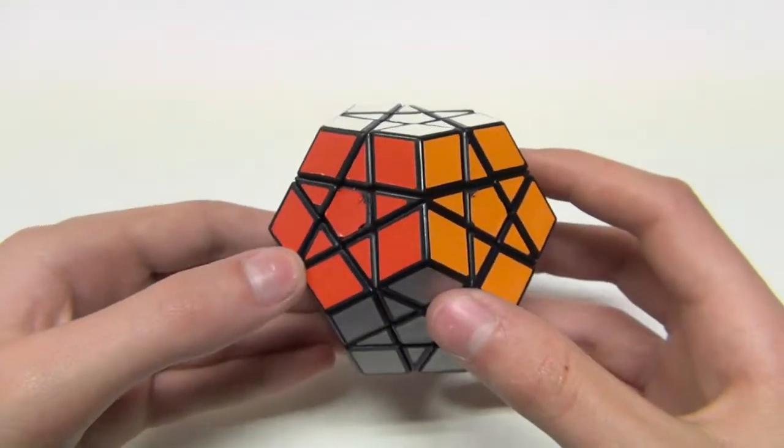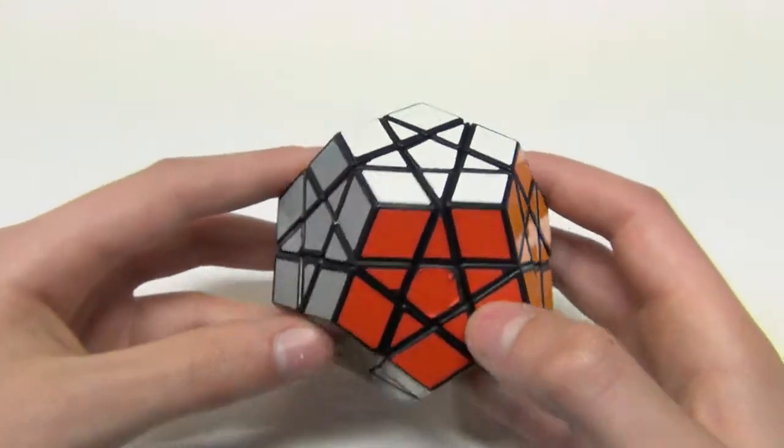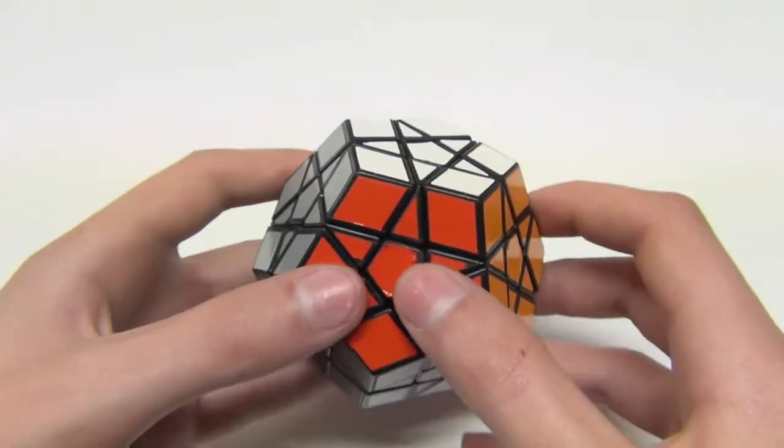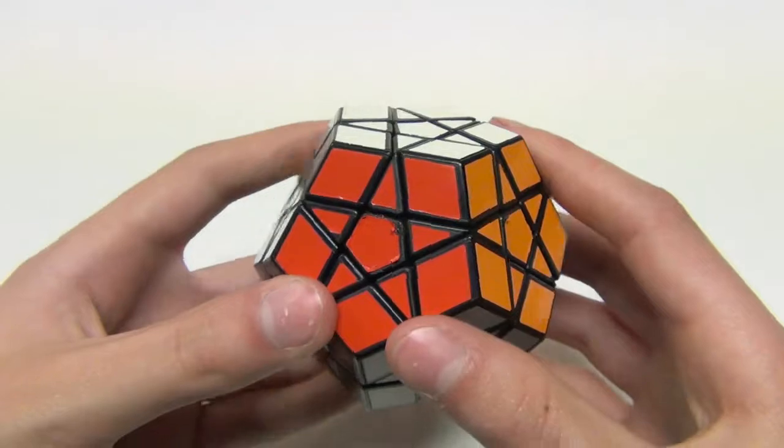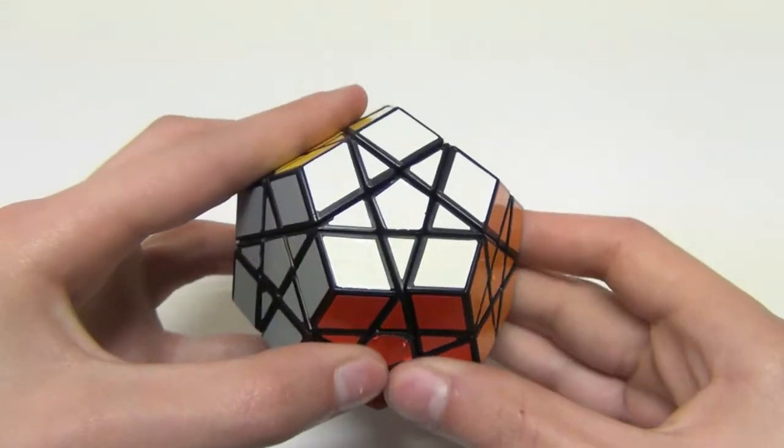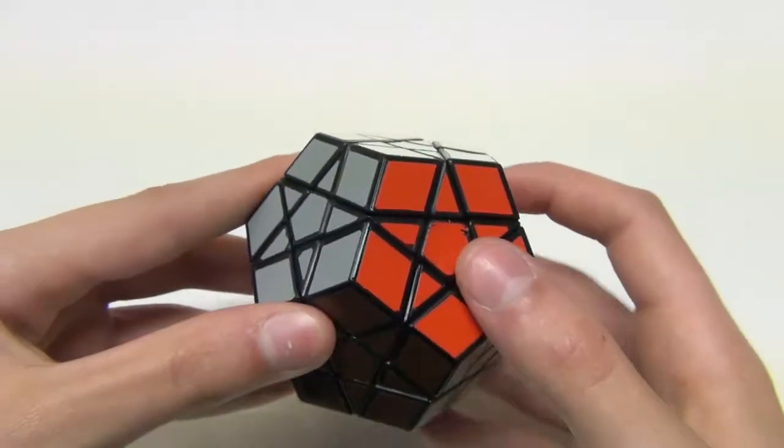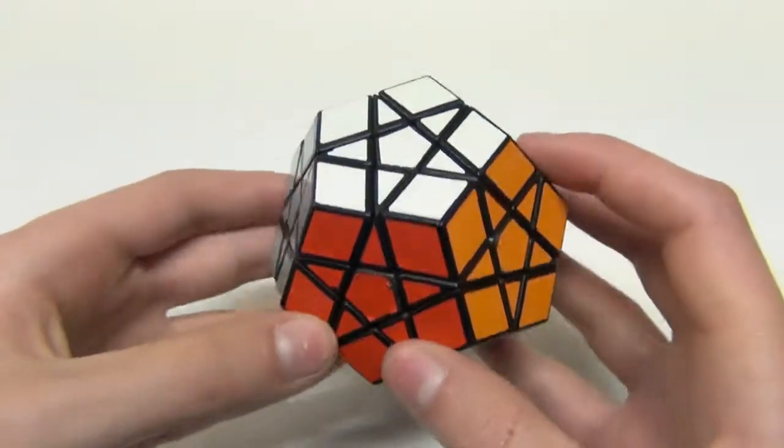So the Hungarian Supernova is actually the very first mass-produced Megaminx. It actually came out even before the Mefferts Megaminx around the early 1980s, around 1982-1983, sometime around there. And so it's actually quite an old vintage puzzle and it's pretty neat.